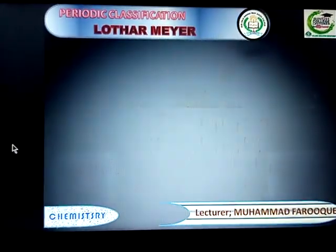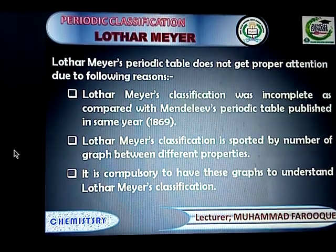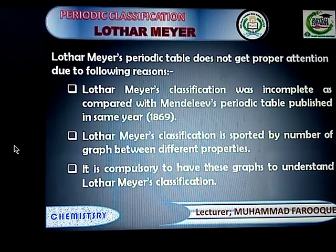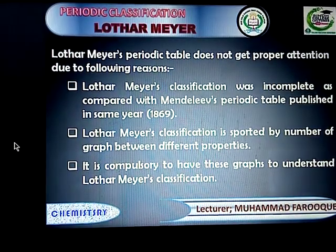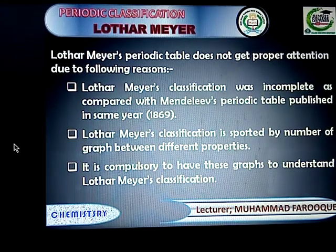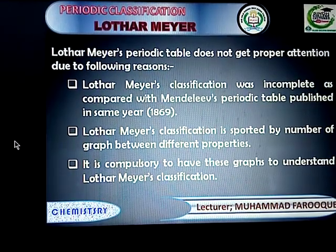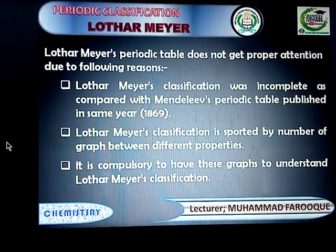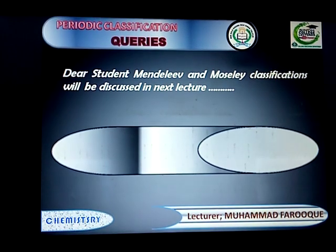Lothar Meyer's classification did not get proper attention for the following reasons. Number one: his classification was supported by a number of graphs, and it was compulsory to have these graphs to understand it. Number two: in the same year, 1869, Mendeleev gave his periodic table, which was much better than Lothar Meyer's classification. Dear students, we will discuss Mendeleev's and Moseley's classification in the next lecture. Thank you.